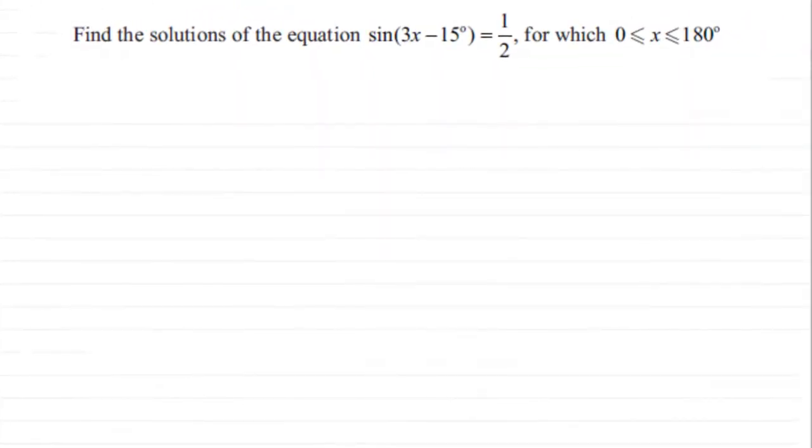Hi, now here we have an example on solving a trigonometric equation. We've got to find the solutions of the equation sin(3x - 15°) = 1/2, for which x is greater than or equal to 0° but less than or equal to 180°.